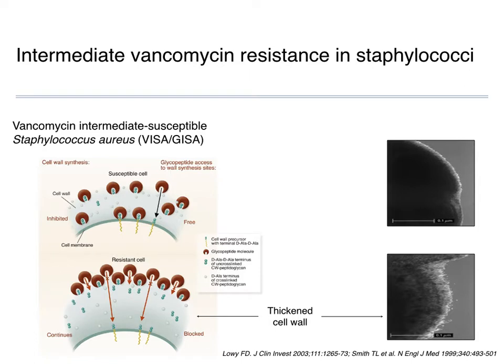With staphylococci, we always feared that enterococci could transfer resistance to staphylococci. When we had the first reports of resistance — which were really not full resistance but rather intermediate resistance — we found that this was not acquired from enterococci; it just kind of developed de novo in staphylococci. You have this thickened cell wall that's produced, causing a lack of penetration of vancomycin to where it needs to act. This is referred to as vancomycin intermediate susceptible Staph aureus — VISA or GISA.